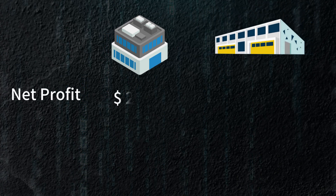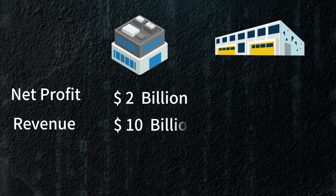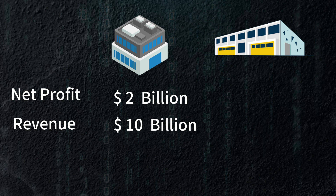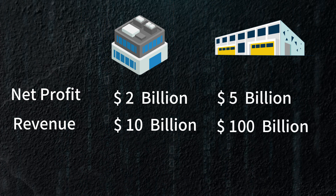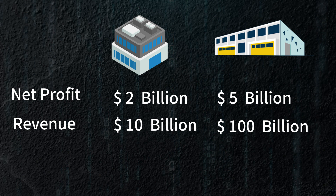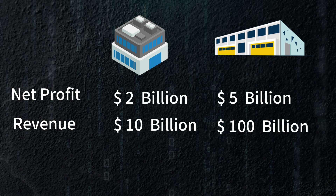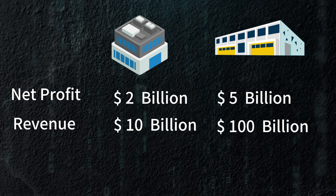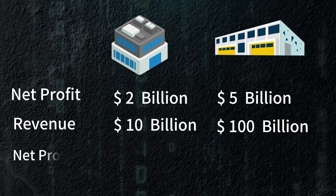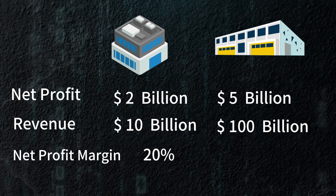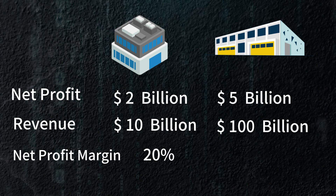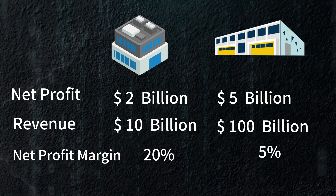To illustrate this point, imagine having two companies. The first company earns $2 billion on $10 billion in total revenue, while the second company earns $5 billion on $100 billion in total revenue. If given the choice between these two, Buffett would opt for the company earning $2 billion. The company generating $2 billion in net earnings is earning 20% on total revenues. In contrast, the company with $5 billion is earning only 5% on its total revenues.